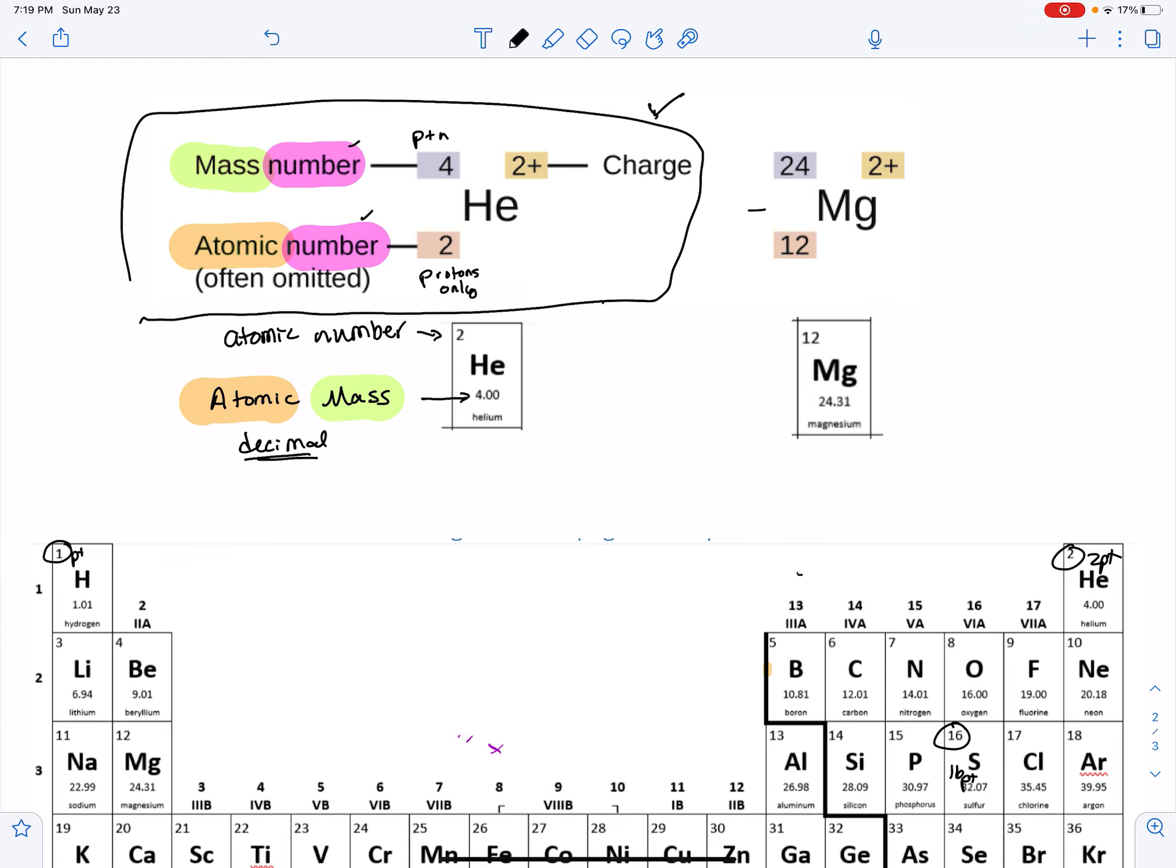Now something else that could be confusing is when you're using the notation here, you're going to see that the atomic number is written in the bottom corner, but when you look at the periodic chart it's written in the top.